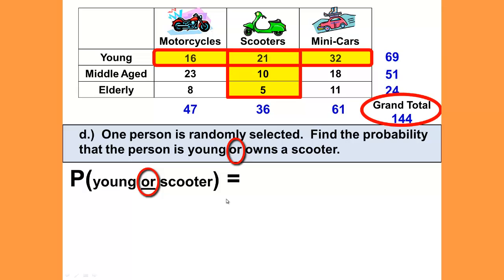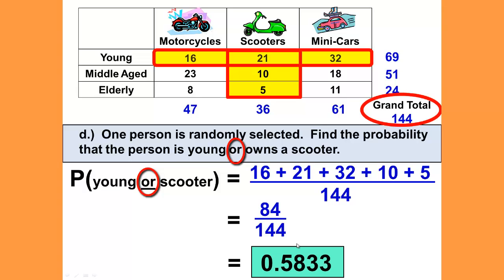And it would be out of our grand total of 144. And we could just add up those numbers that we've highlighted. That would be 16 plus 21 plus 32 plus 10 plus 5, all over 144. That would give us 84 out of 144, which gives us 0.5833.